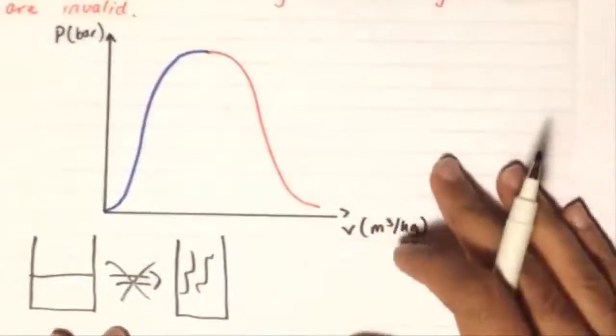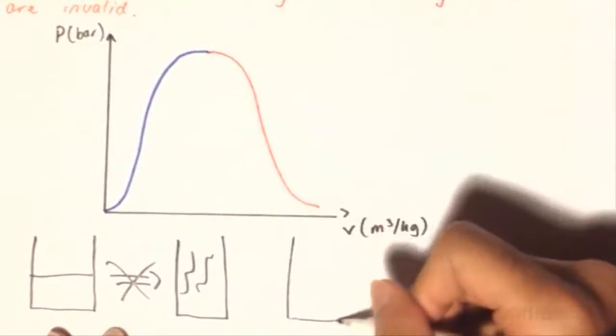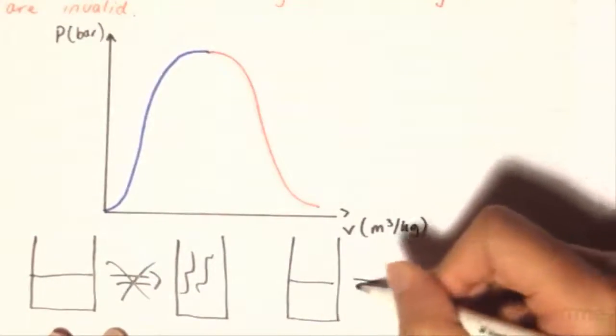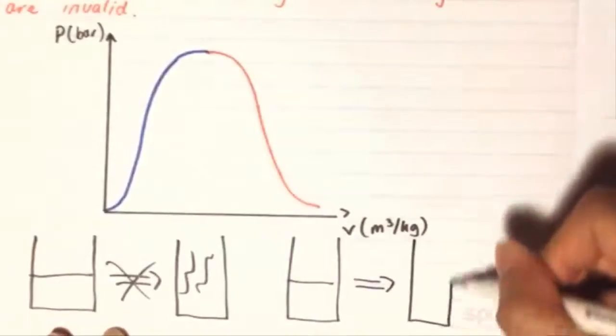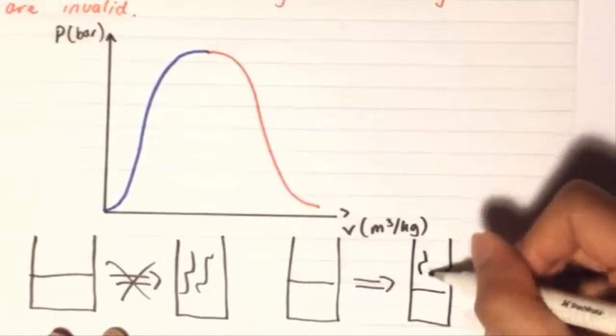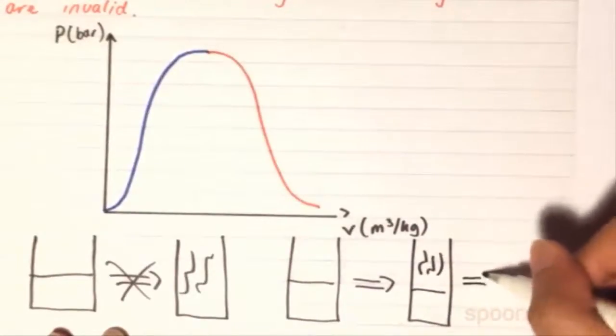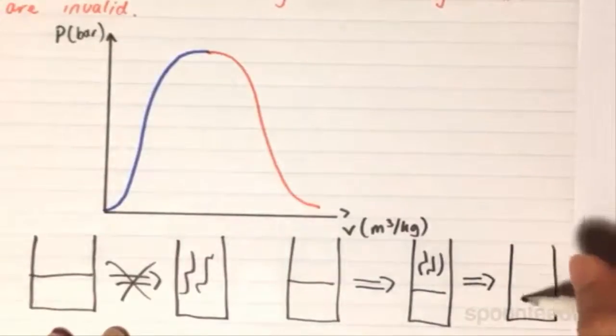Rather, what tends to happen is we have the liquid state, and then a little bit of a hybrid between liquid and vapor state, until we finally get the full vapor state.